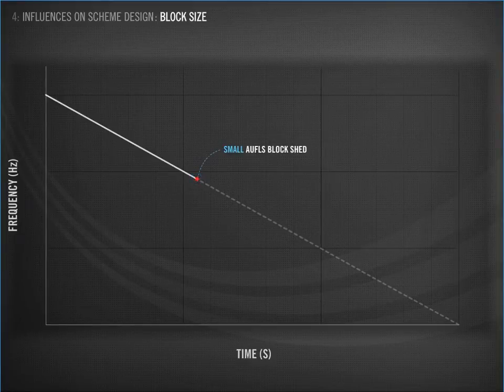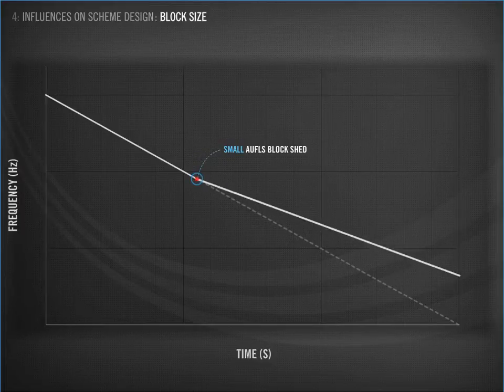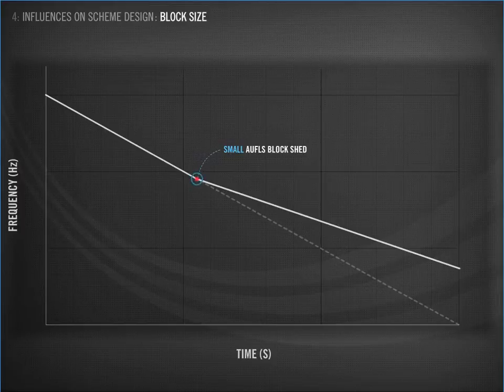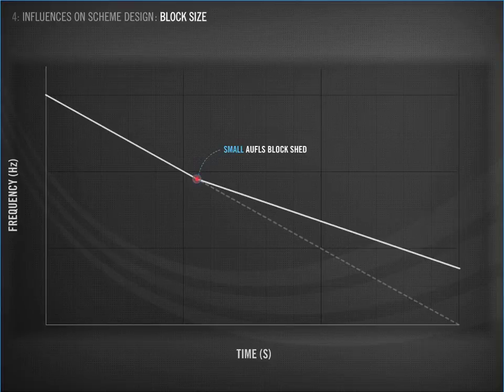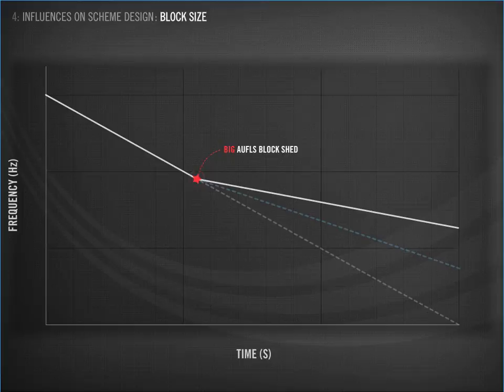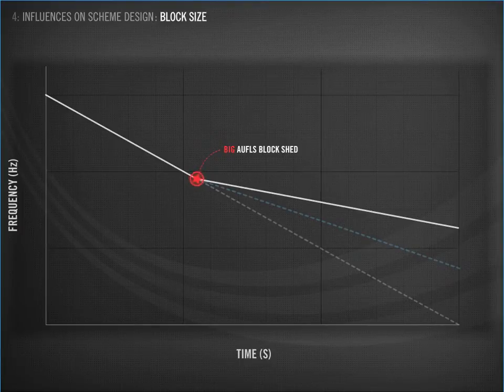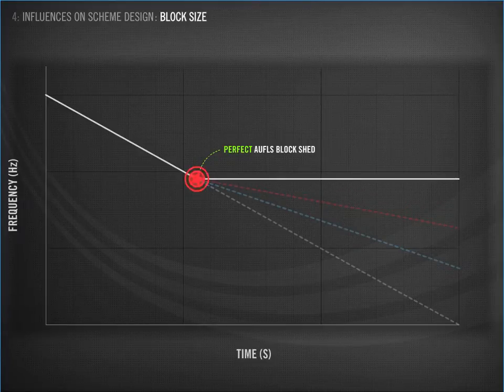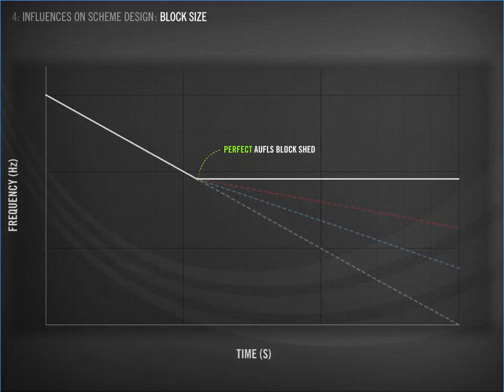Here we have disconnected a small amount of load from the system. This is like hitting the brakes in your car. Disconnecting this small load slows down the rate at which the frequency is falling. If you hit the brakes even harder, by disconnecting a bigger load, then you slow down even more. Here is a bigger AWFLS block, and you can see it has slowed the fall in the frequency even more. If we shed the exact amount the system needs at the time, the frequency stops falling and levels out. The generator's governors pick up and the frequency is returned to 50 Hz. This is the perfect response.